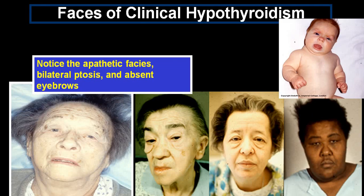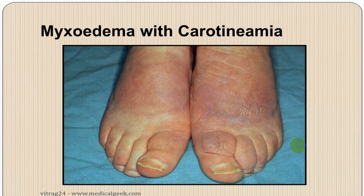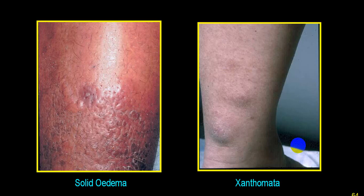Clinical images shown include wheat goiter, macroglossia, typical cretinism, myxedema facies (bilateral ptosis, absent eyebrows), myxedema with carotenemia, and xanthomas/xanthelasma due to excessive cholesterol. Myxedema tissue demonstrates solid edema with mucin/cholesterol deposition.